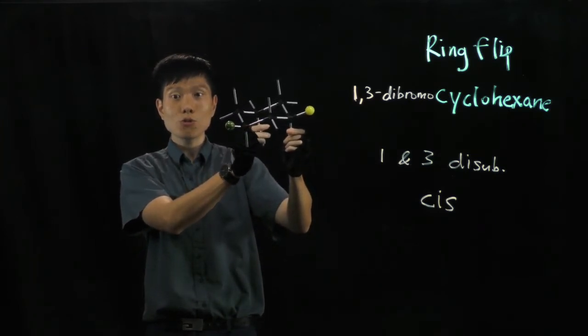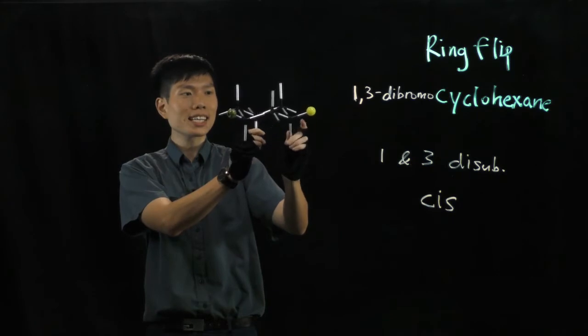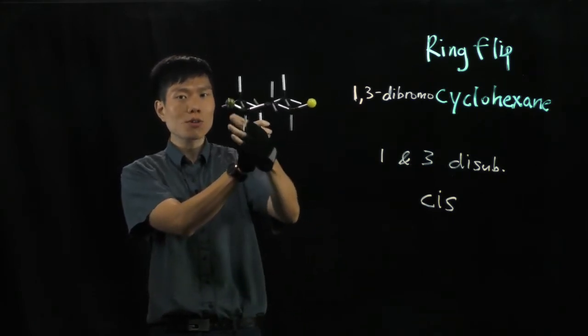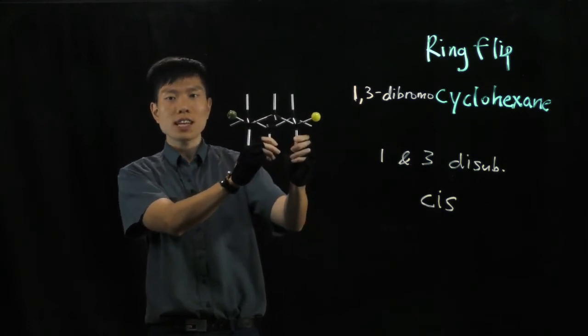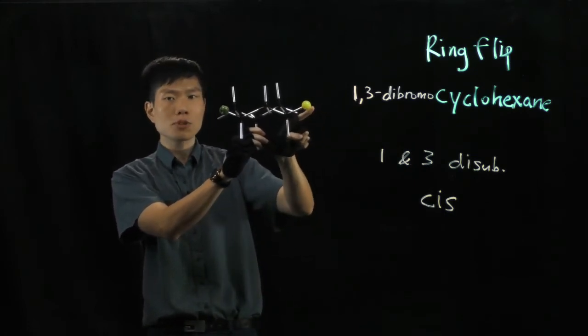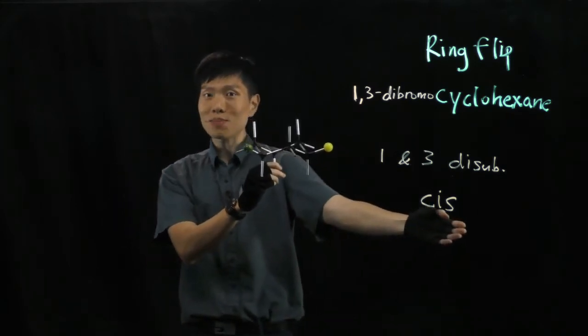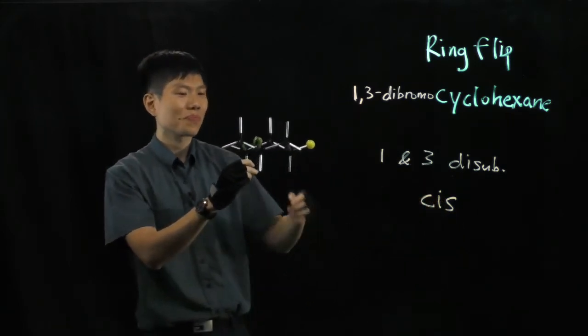From an angle, the 2 substituents are pointing to the side. Axial from just now become equatorial - equatorial for both. And now both bromines are pointing sideways up. Do you see? This is up and this is up. So again, they are still cis because they are facing the same direction.